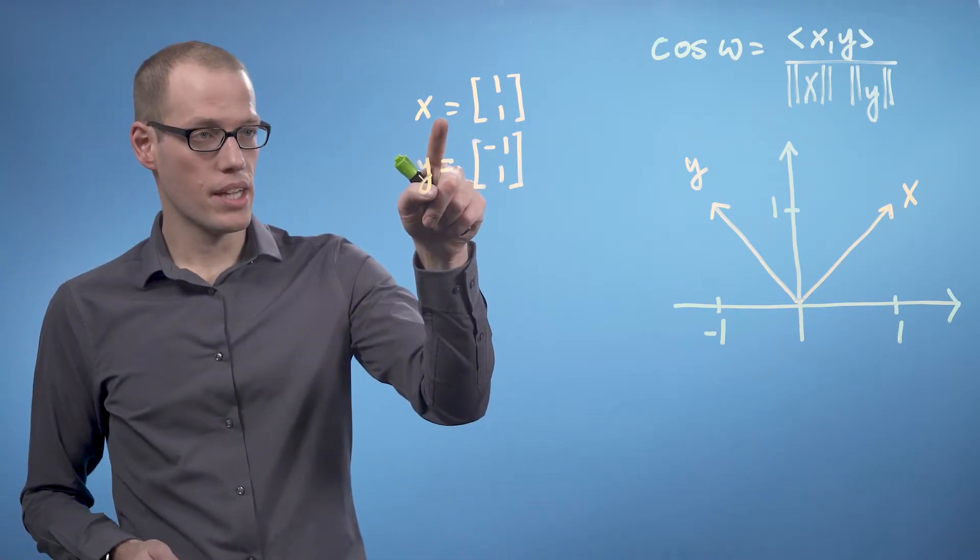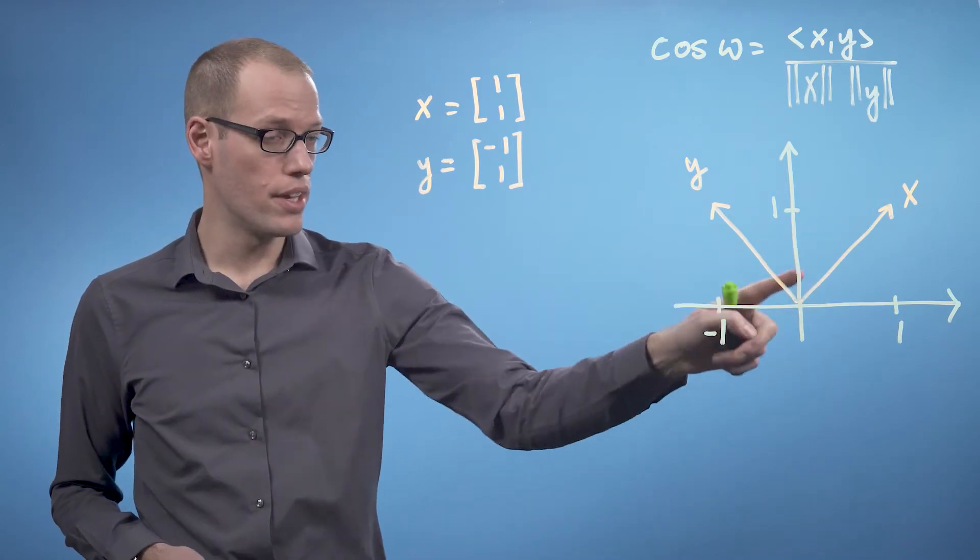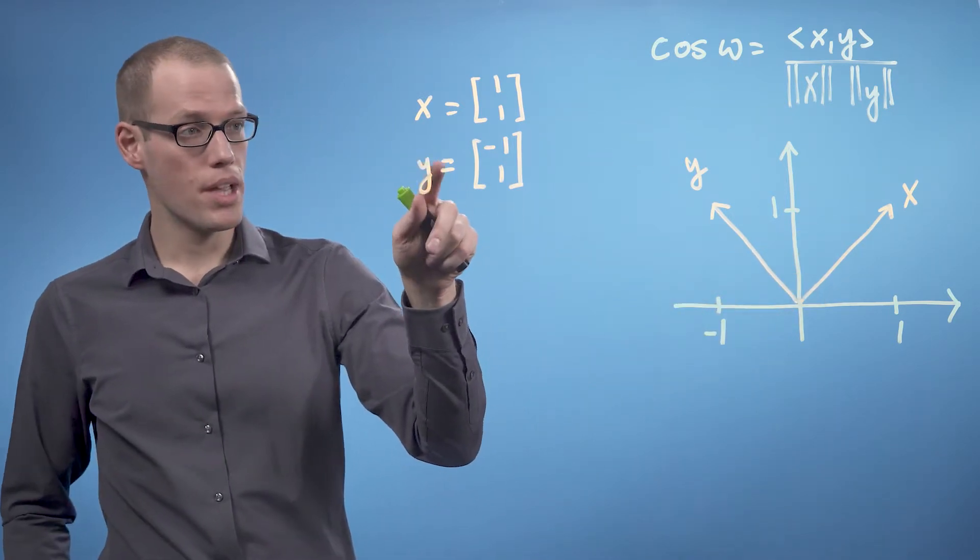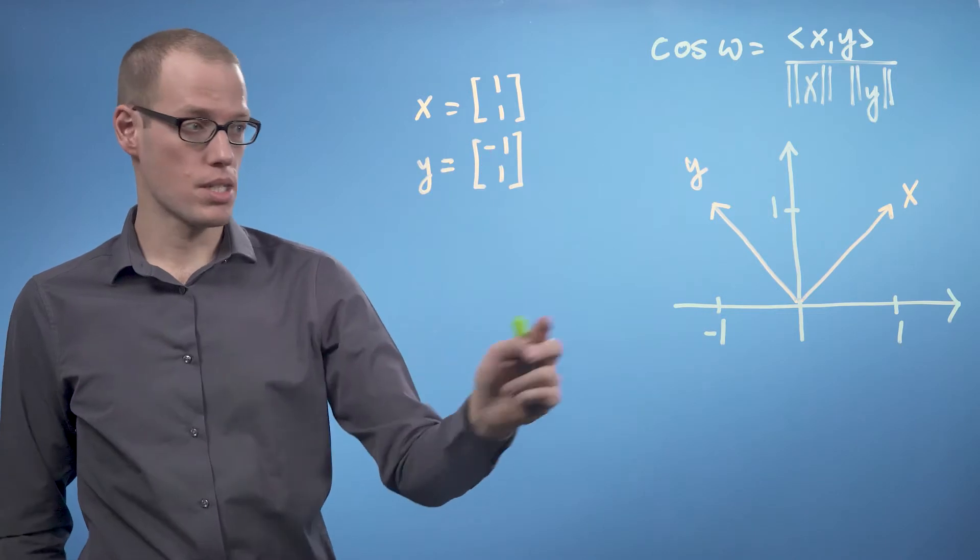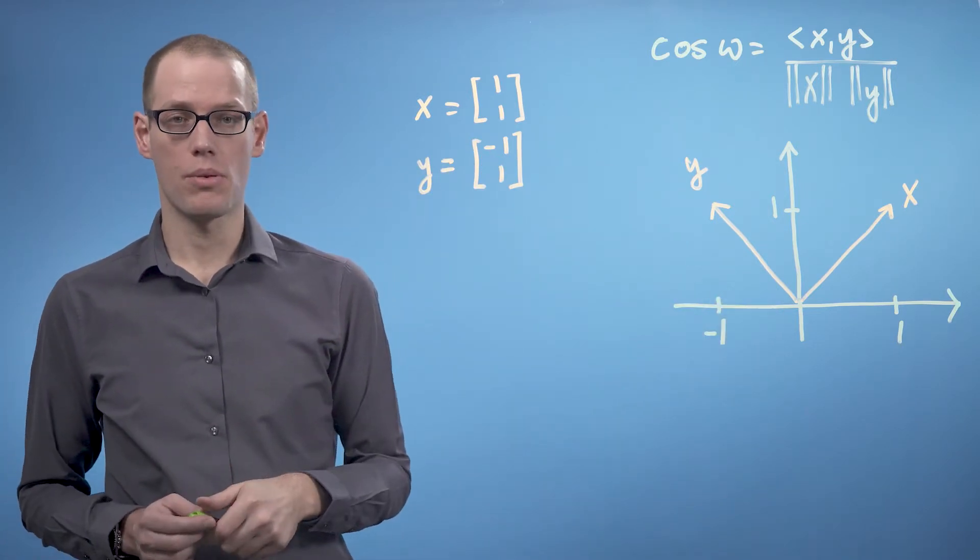We're going to look at the same vector x that we used before, so x equals [1,1], which is this vector over here. And now we choose y to be [-1,1], and this is this vector. Now we're going to compute the angle between these two vectors.